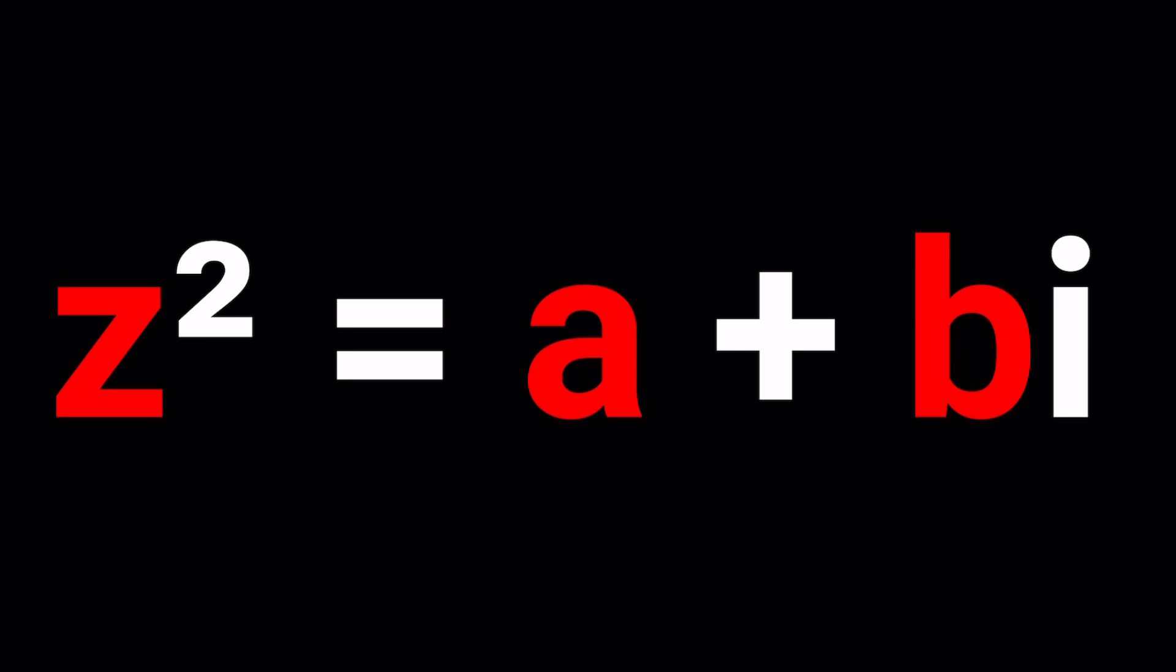So there are two numbers whose square equals a complex number. Those are called the complex square roots of a plus bi. To be able to solve this problem we're going to come up with a formula that you can always use. Let's get to work.